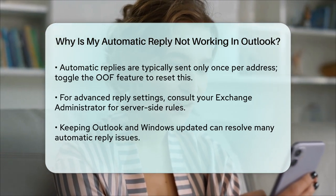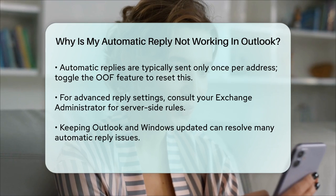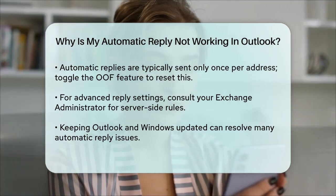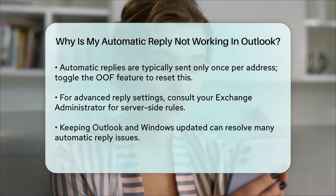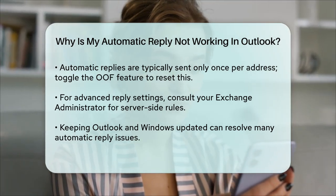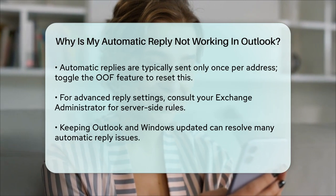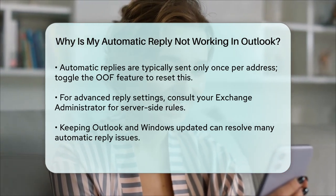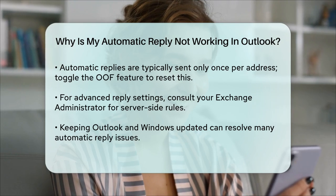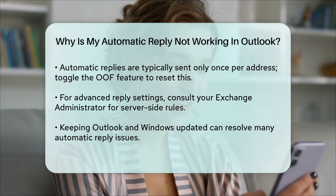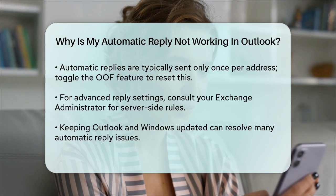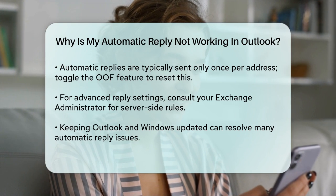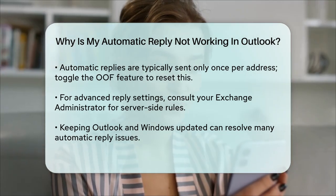Lastly, ensure that your Outlook is up to date and not in offline mode. Sometimes an outdated version of Outlook or a software issue can cause the automatic reply feature to malfunction. Updating Outlook and your Windows system can resolve many of these issues. By checking these areas and applying the relevant solutions, you should be able to get your Outlook automatic replies working smoothly again. Remember, each issue might have a specific fix, so take the time to troubleshoot and adjust your settings accordingly.